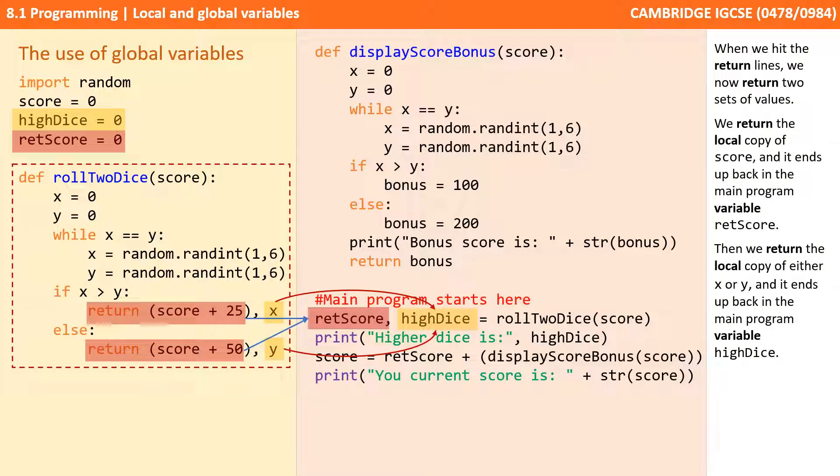Then we return the local copy of either x or y and it ends up back in the main program variable, highDice.